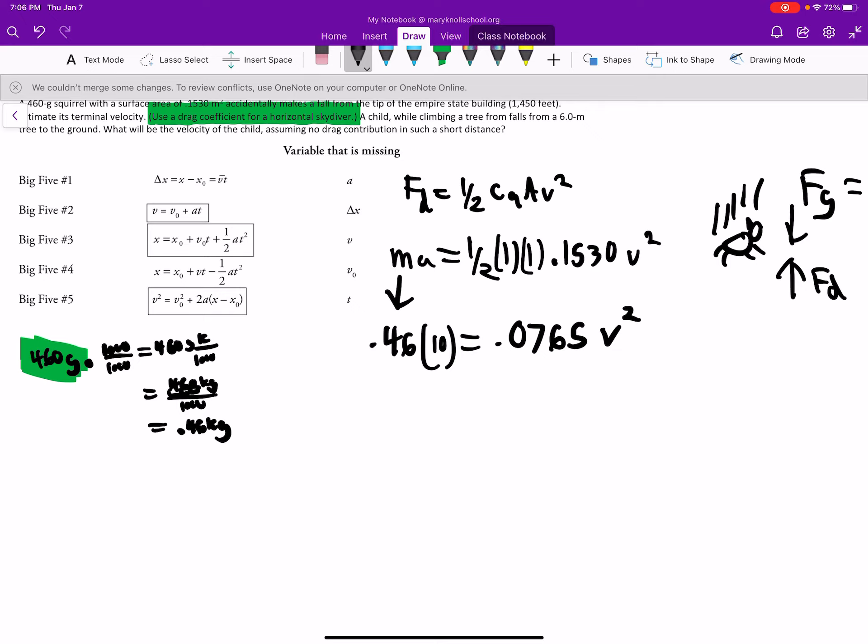0.1530 divided by 2. And we get 0.0765. 0.0765 v squared. All right, let's divide. Well, let's multiply this 0.46 by 10. We end up with 4.6 equals 0.0765 v squared. Divide both sides by 0.07. That's a 6, 6, 5. And 0.0765. So v squared is going to be 4.6 divided by 0.0765. And we get 60. 60. We could move these for a while, but there's no reason. Only three significant digits is necessary.